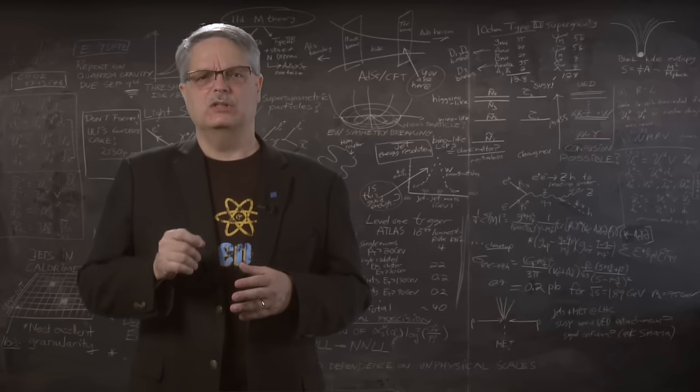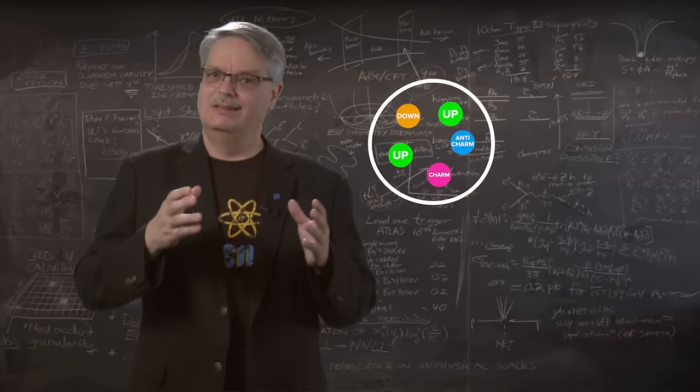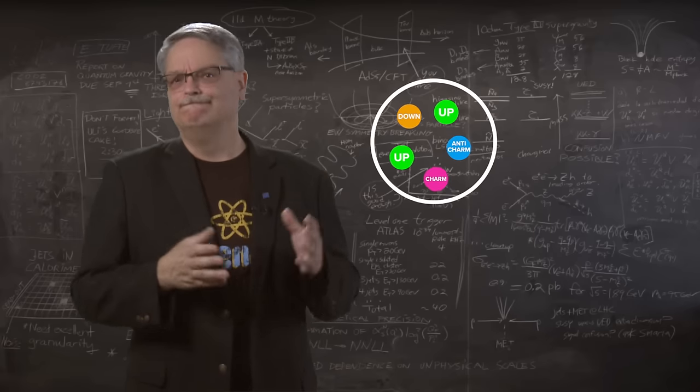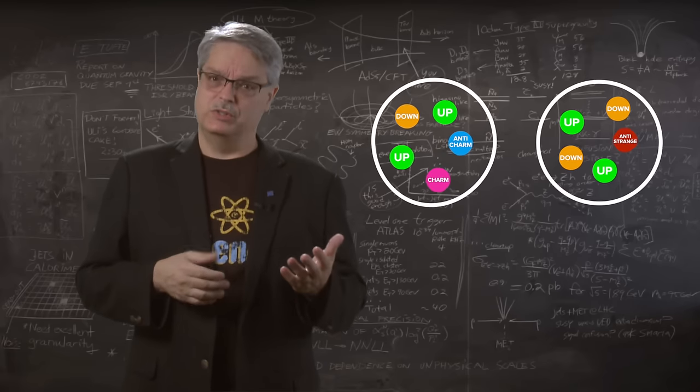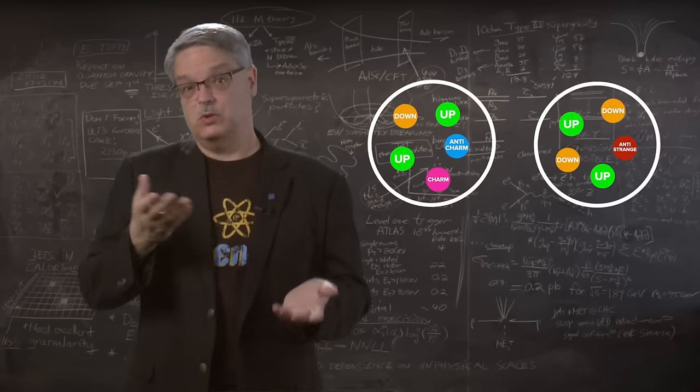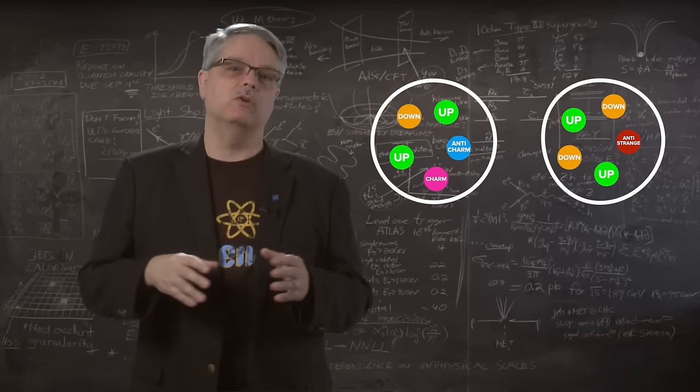A troubling question is the fact that the LHCB pentaquark candidates are super heavy because they contain charm quarks. Why are there not lighter pentaquarks? Is it because charm pentaquarks are easier to make, or are they more stable? Nobody really knows, although the scientific community is mulling over the possibilities.